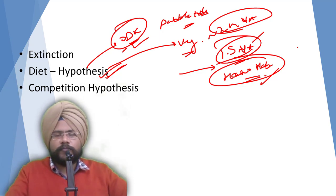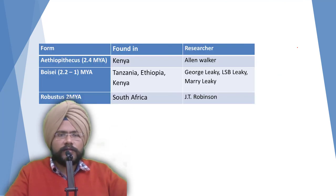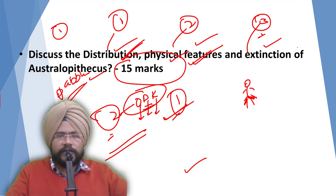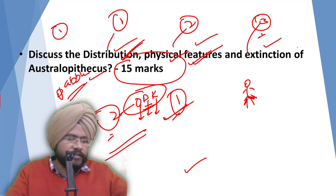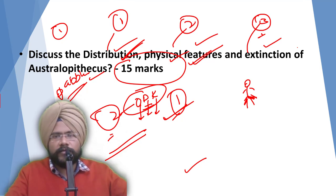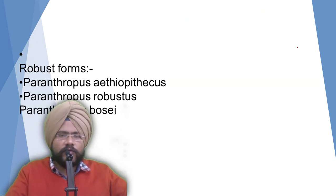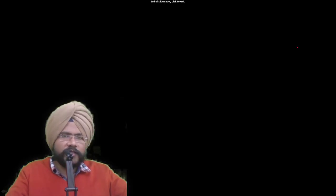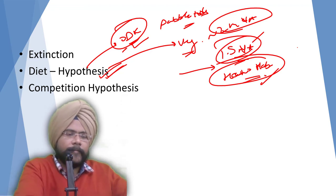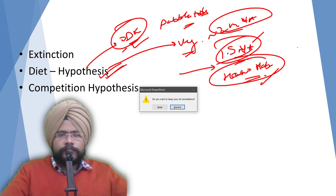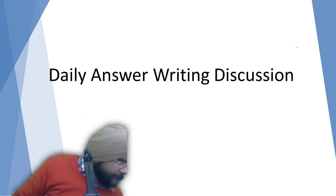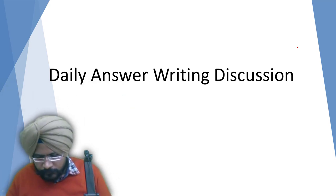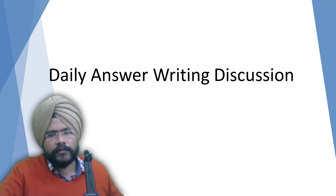So Australopithecus should now be properly understood. Remember who is a man — it is important because UPSC often asks questions in a twisted manner. Many questions on Australopithecus have already been asked, so the next question may be framed differently. If you have any doubts, do write in the comment section and I'll try to address them. Thank you very much.